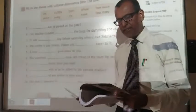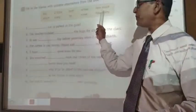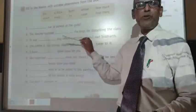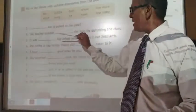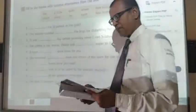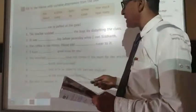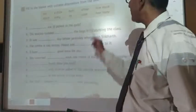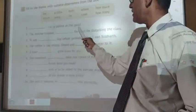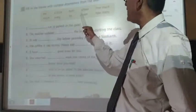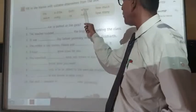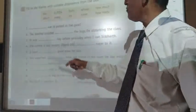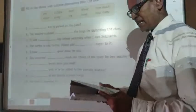Now we will see the next exercise where determiners are given. We have to use it properly. Let us see the sentence. Dash car is parked at the gate. So answer will be whose car? It is interrogative sentence. This is the interrogative word. Although these are also interrogative words, this is the proper one. So whose car is parked at the gate?